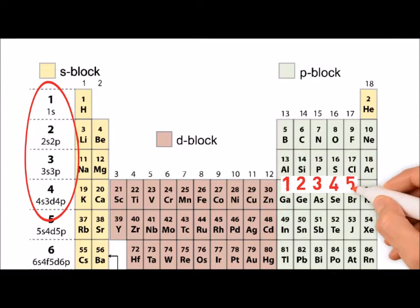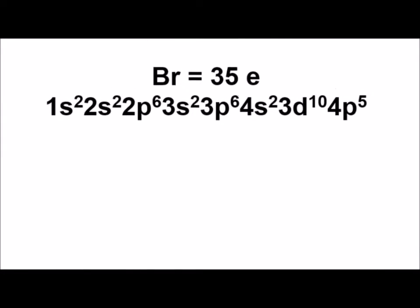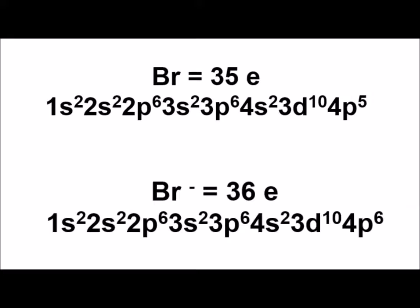If we were writing the electron configuration for the bromine anion, we would begin writing the same configuration as the neutral bromine atom, except the number of electrons in the P orbital changes from 5 to 6, because the bromine ion has 36 electrons.